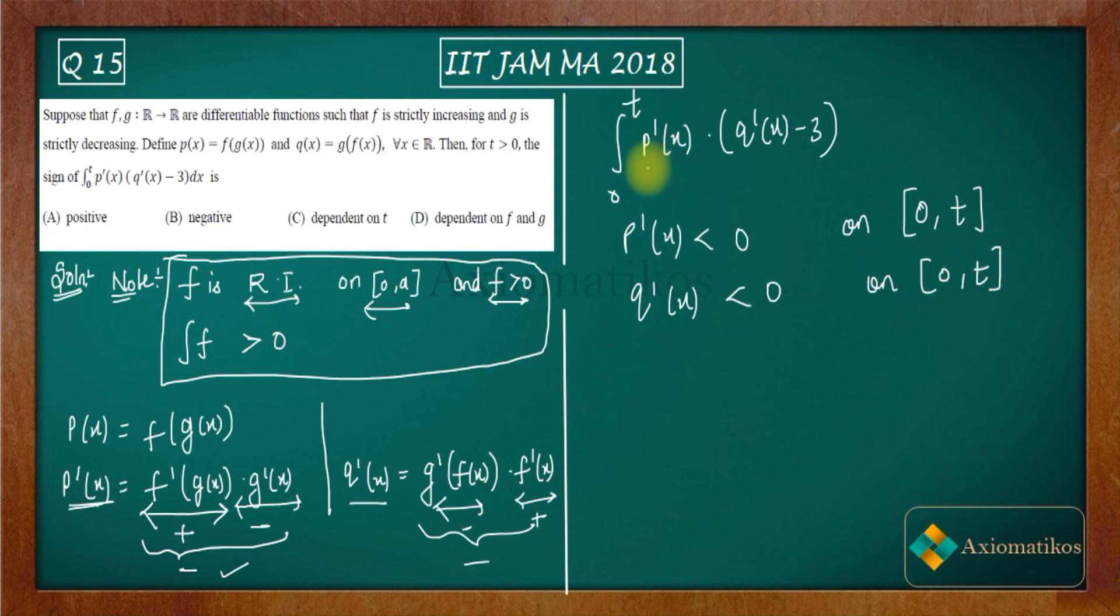That means this is the product. So this thing will be negative times negative means positive. So the whole thing is positive, it's greater than zero. Are you getting my point? Because you have minus here also, therefore you can take minus common. So it's greater than zero. This quantity is greater than zero.